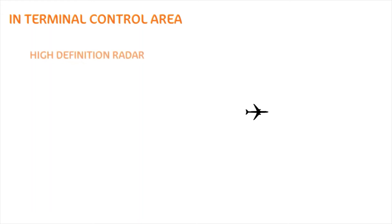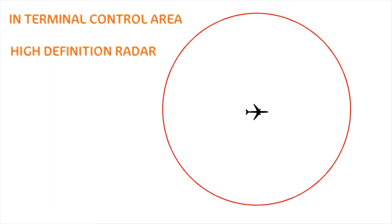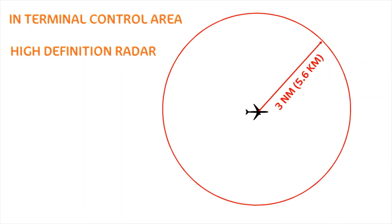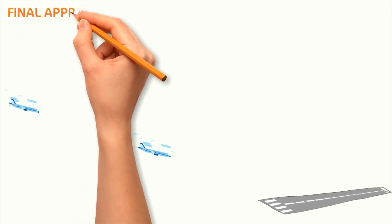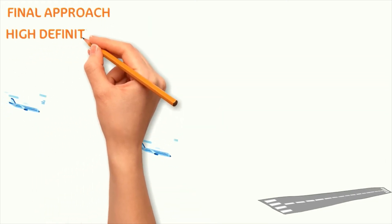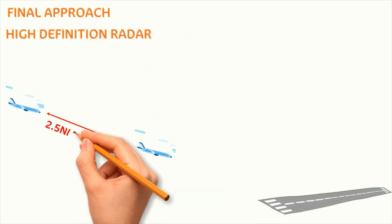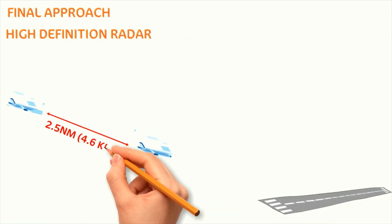If the aircraft is in a terminal control area — meaning the aircraft are close to the airport of arrival or departure — and if the airport is equipped with high definition radar, then the minimum radar separation is reduced to 3 nautical miles or 5.6 kilometers. If two aircraft are on final approach and the airport is equipped with high definition radar, then the minimum radar separation is reduced to 2.5 nautical miles or 4.6 kilometers.